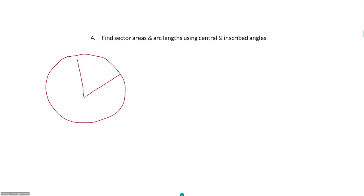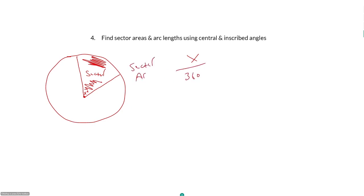For sector area: we have a central angle that forms this sector — this pie wedge shape. If we want to find the area of this sector, we need our central angle. We can use our inscribed angle to get our central angle, and then use the central angle as our proportion. Our sector area is just some portion of the area of our circle as a whole. That portion is our central angle over 360. So sector area equals (central angle / 360) × πr².